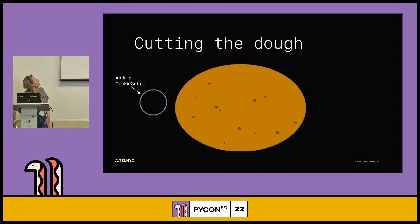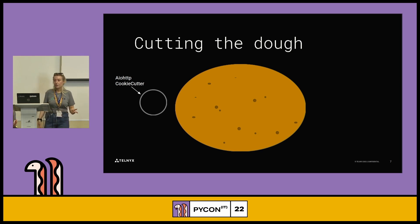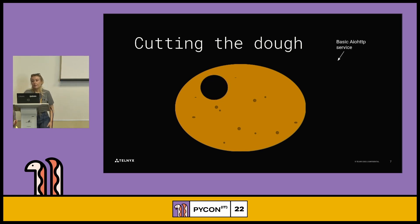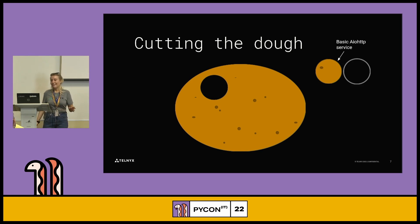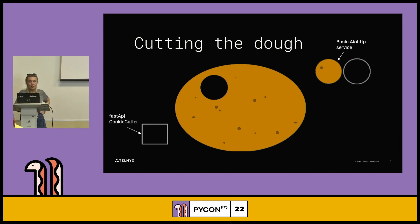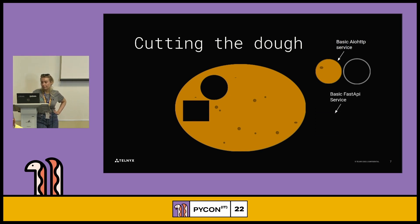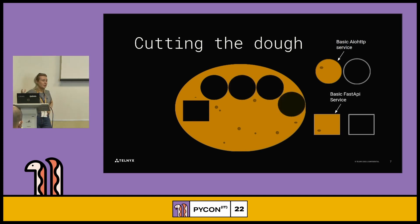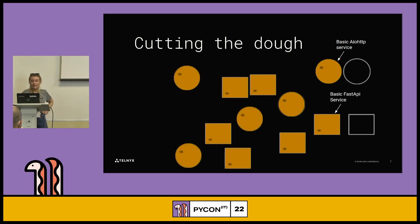For that analogy, this could be the dough in this scenario. Then you have an AioHTTP cookie cutter, and you cut the dough pretty simply to get a basic AioHTTP service. The cookie cutter can be reused many times. The FastAPI cookie cutter looks a little different, but pretty similar, since they are pretty similar frameworks. You can cut the dough and get one of them. You can keep doing this however many times you want, and then you'll get multiple services that are all pretty similar and consistent but using different frameworks.